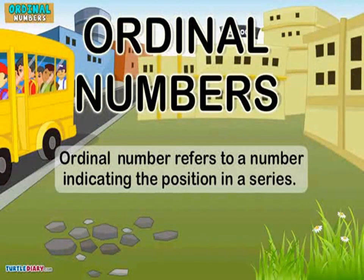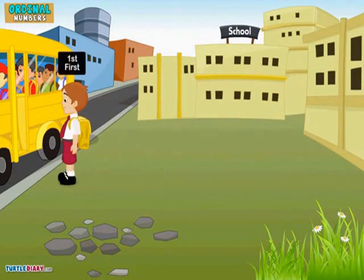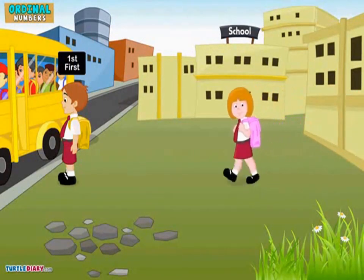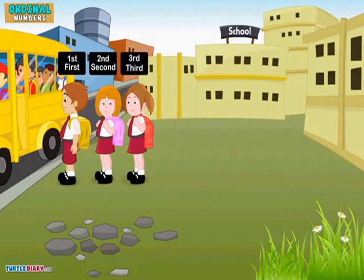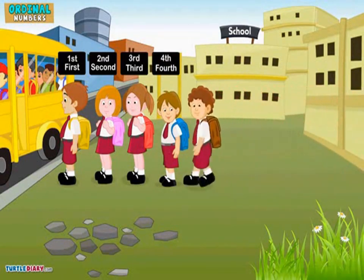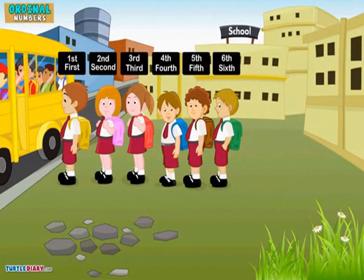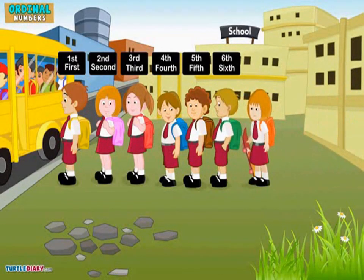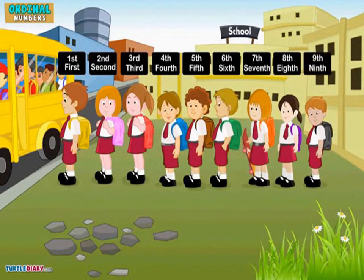First, second, third, and fourth — a series. For example: the boy with the yellow bag is in the first position, the girl with the pink bag is in the second position, the girl with the red bag is in the third position, the boy with the blue bag is in the fourth position, the boy with the brown bag is in the fifth position, the boy with the green bag is in the sixth position, the girl with the orange bag is in the seventh position, the girl with the purple bag is in the eighth position, the boy with the black bag is in the ninth position, and the boy with the yellow bag is in the tenth position.